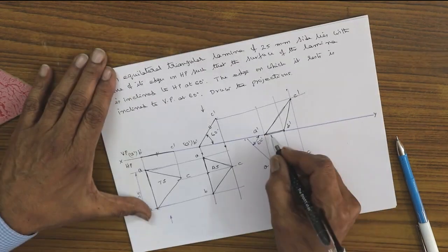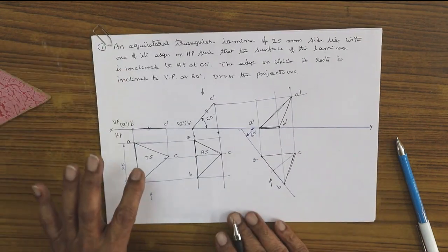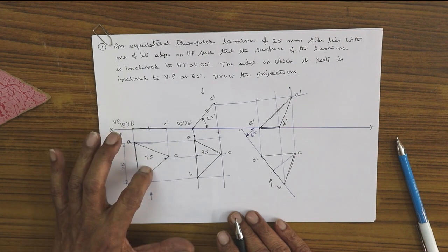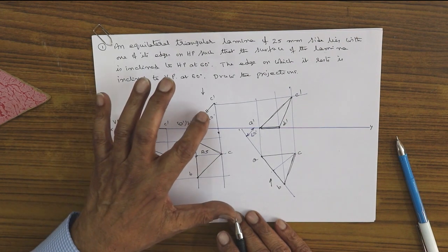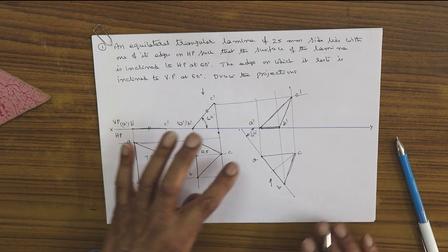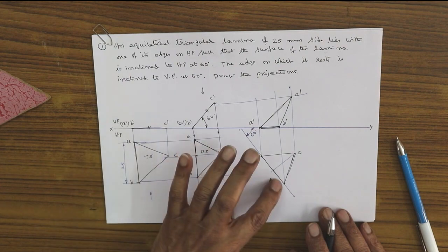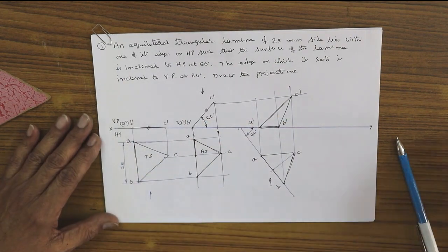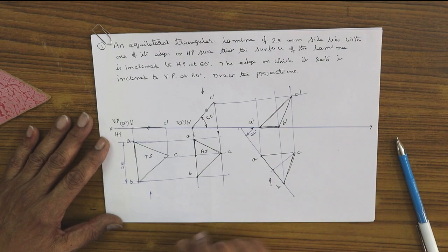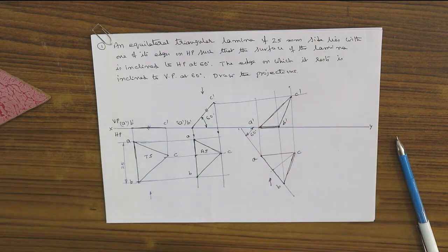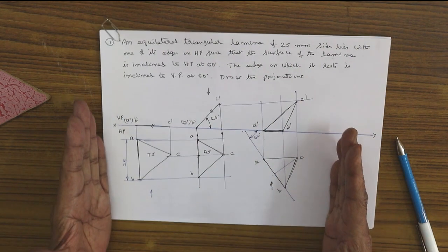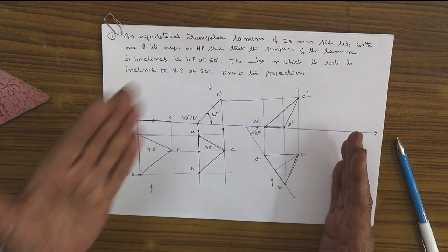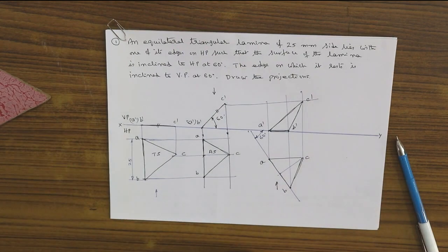The final answer is now visible. The triangular lamina is drawn on HP as the initial figure. First step: surface inclined to HP. Second step: side inclined to VP. All the positions are drawn here using the change of position method to arrive at the final answer.